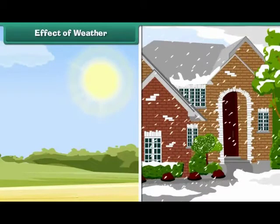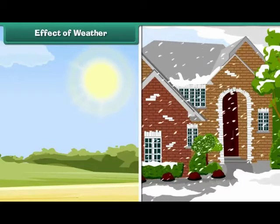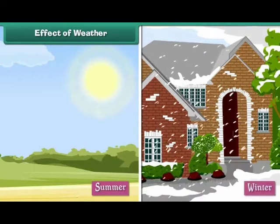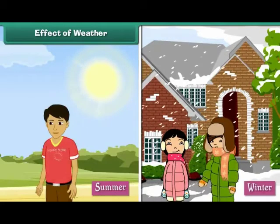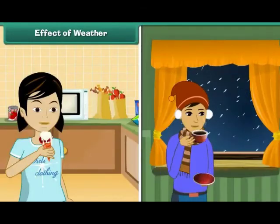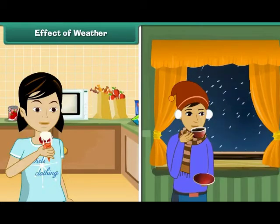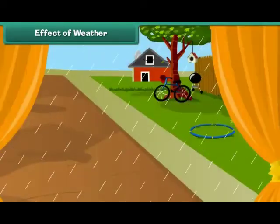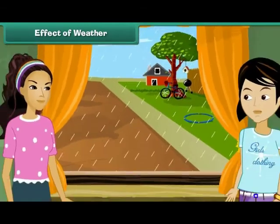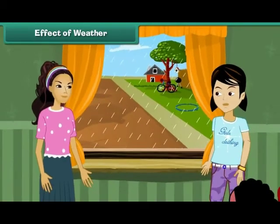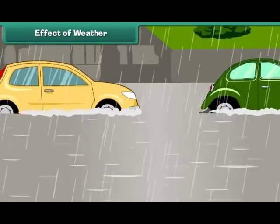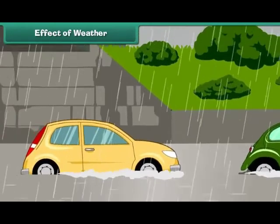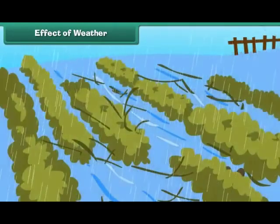Weather affects us in many ways. For example, we wear clothes according to the prevailing weather conditions. We wear cotton in summers and woolens in winters. The food that we eat also changes according to weather. We prefer to eat cold things in summers and hot things in winters. We change our routine according to the changes in weather — for example, when it rains heavily during playtime, we stay indoors. Excessive rainfall causes floods resulting in loss of life and property. Temperature changes and rainfall affect our crops.